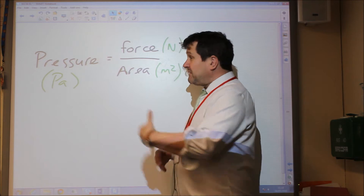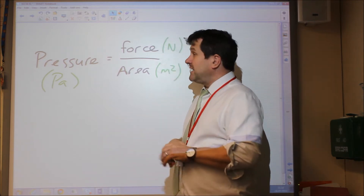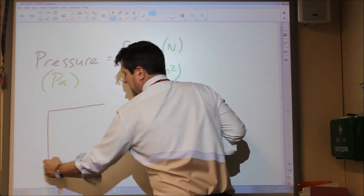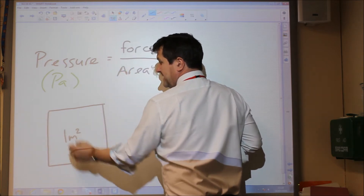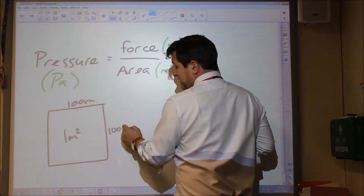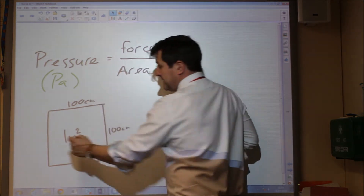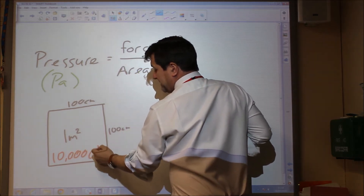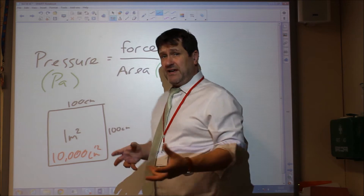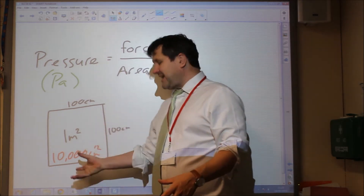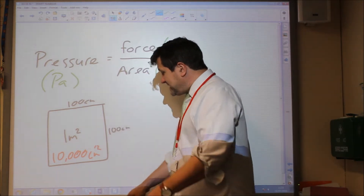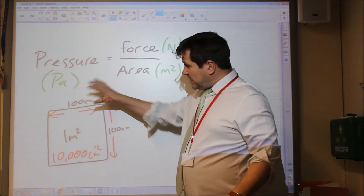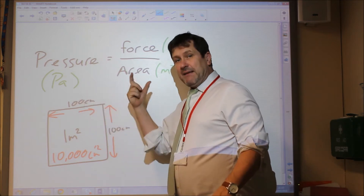Because it's area - like we talked about volume before, where there's a million centimetres cubed in a metre cubed - with area, because there are just two dimensions, if we have one metre squared, there are a hundred centimetres by a hundred centimetres, so a hundred times a hundred is ten thousand centimetres squared. If you are converting from centimetres squared to metres squared, remember there are ten thousand centimetres squared in a metre squared. It's easier if you convert into metres when calculating the lengths, as it makes the calculations more straightforward.